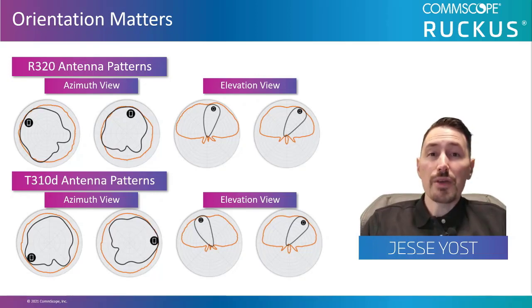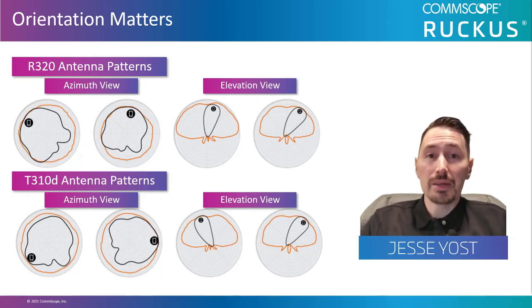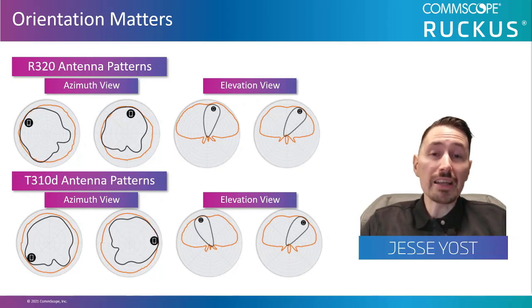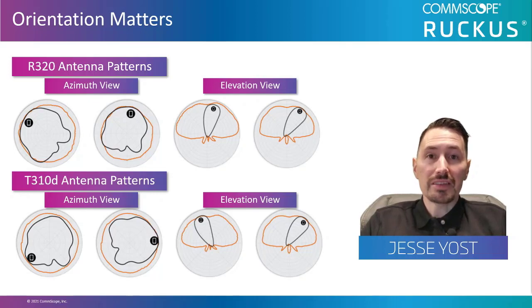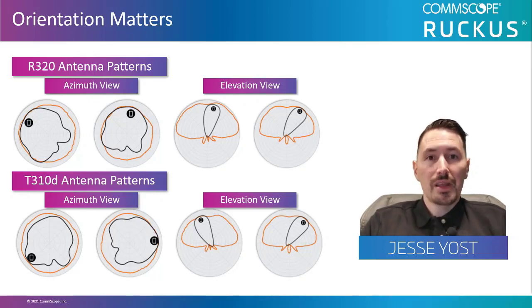If you have an AP with incorrect orientation in your environment, you may be thinking that it's providing coverage to an area that it isn't. What we're displaying on the left-hand side of the screen are AP antenna patterns for both our indoor and outdoor APs.